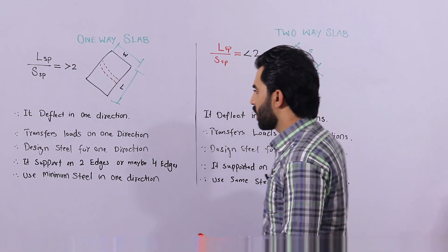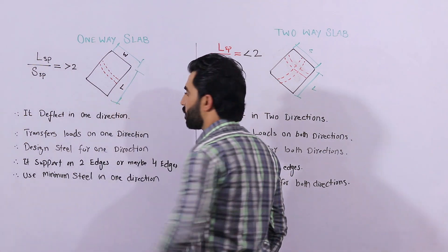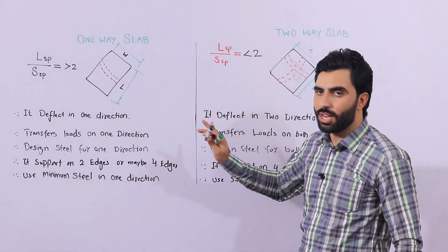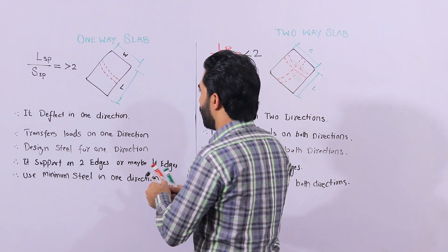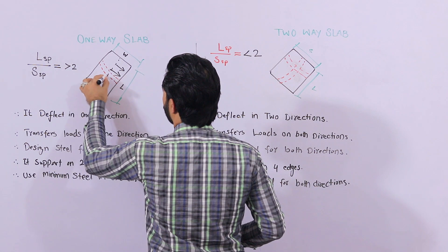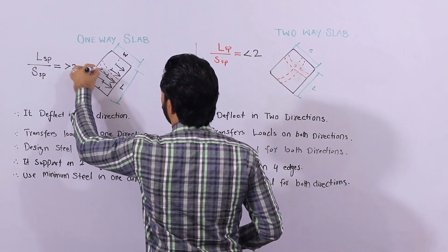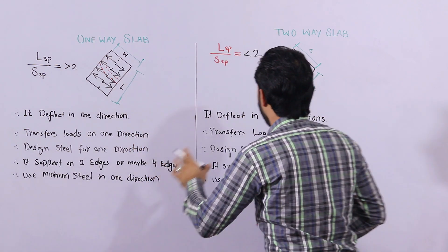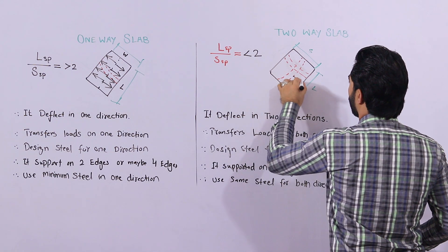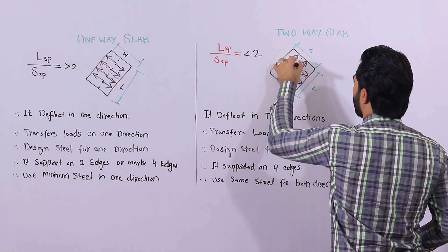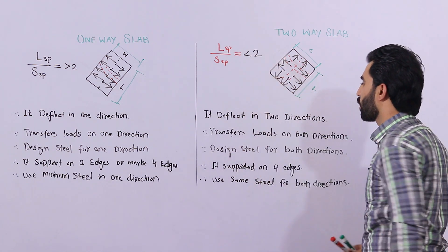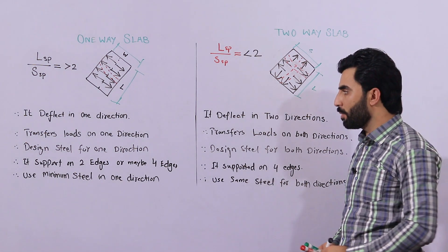In one-way slab, the load transfers on one direction only — on the lengthwise direction, like this. But in two-way slab, it transfers the loads on both directions. So we have the load on both directions — on this side and also on this side. For all sides we have load, transferring on both directions: shorter span and longer span.